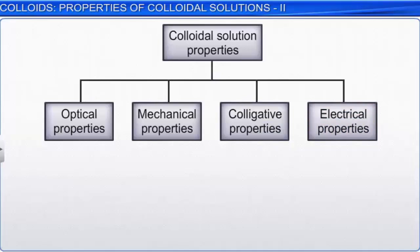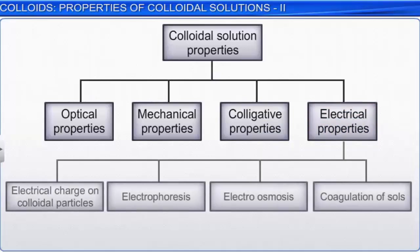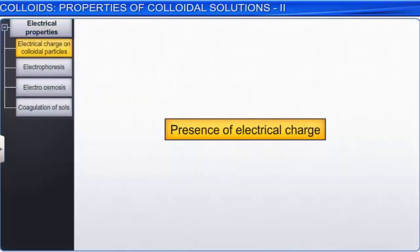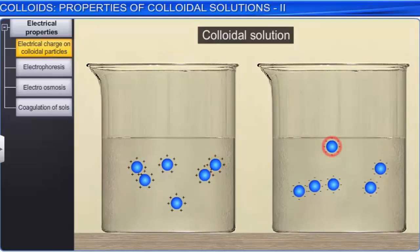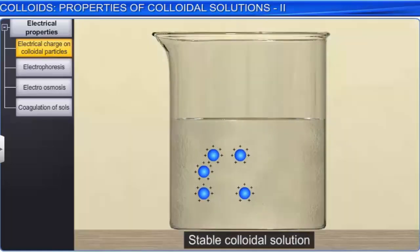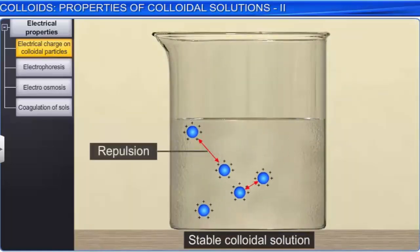Apart from exhibiting color, the Tyndall effect, Brownian motion and colligative properties, colloidal solutions also exhibit electrical properties. The properties that we will discuss are electrical charge on colloidal particles, electrophoresis, electroosmosis and coagulation of salts. The particles of a colloidal solution possess a definite electrical charge, either positive or negative. Due to the presence of the same charge, they repel each other and do not combine to form larger particles, keeping them dispersed in the medium, and hence a colloidal solution is stable.